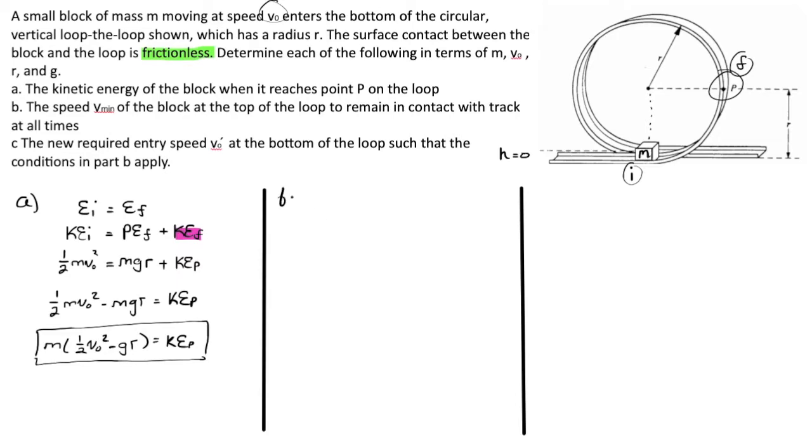In part b, we're asked a more interesting question. What is the minimum speed of the block at the top of the loop, such that it remains in contact with the track at all times? So you've gotten this far, and now your block is up here. It has a certain velocity, vmin, that it needs in order to stay in the loop. But what does that mean?